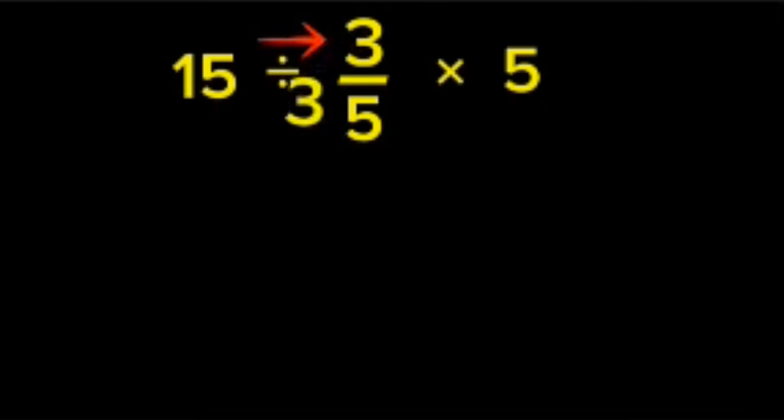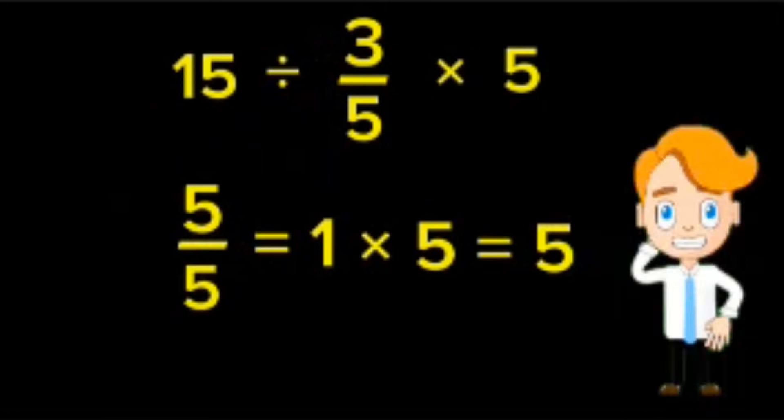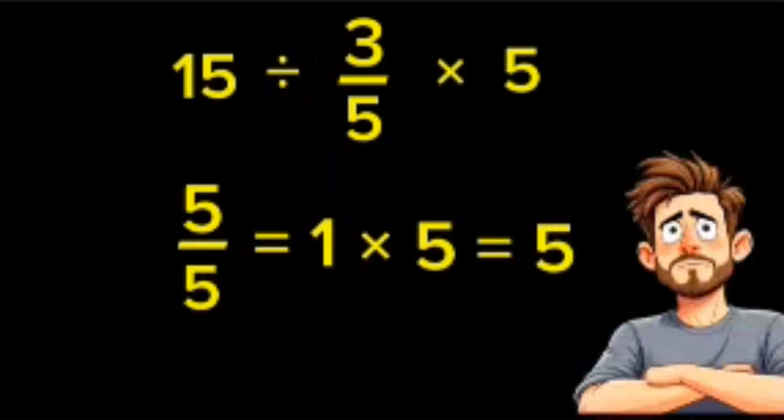15 divided by 3 is 5. 5 divided by 5 is 1. 1 multiplied by 5 is 5. Boom. The answer is 5. Simple. Clean. Done.